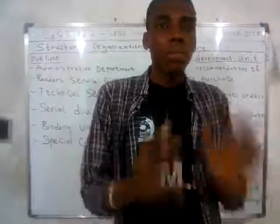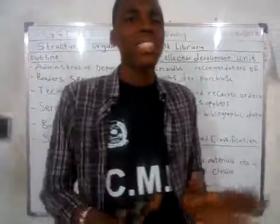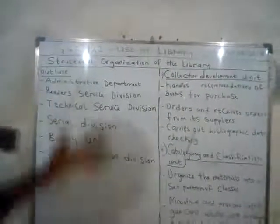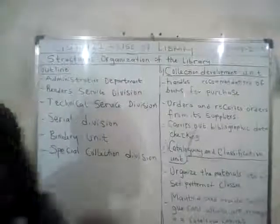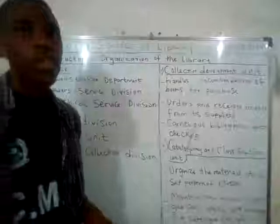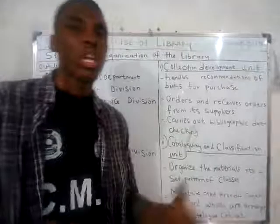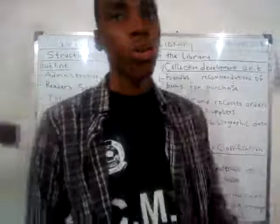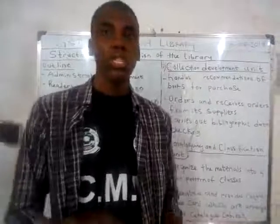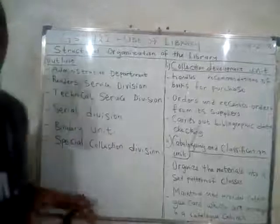The job of this unit is to arrange library materials and collections into a set pattern of classes. Now, the Serial Division Unit of the library is a separate division entirely from other aspects of the library. It contains serials, journals, yearbooks, and government publications — for example, publications from the WHO (World Health Organization) and the United Nations are found in the serial division.